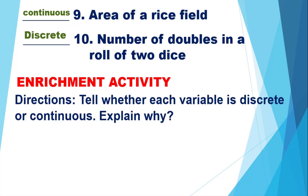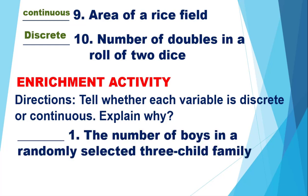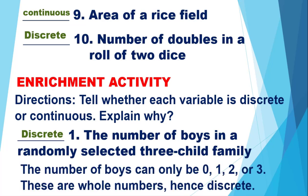For the enrichment activity, tell whether each variable is discrete or continuous and explain why. For number 1, the number of boys in a randomly selected three-child family — it could be 0, 1, 2, or 3 boys. It uses counting numbers and whole numbers, so it is a discrete random variable. The number of boys can only be whole numbers — hence, discrete.